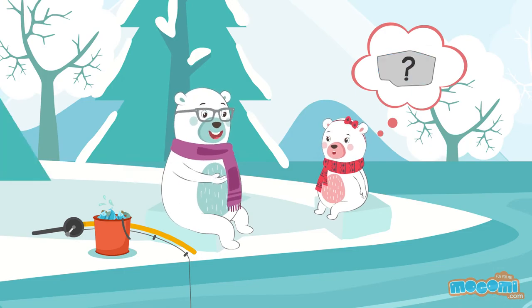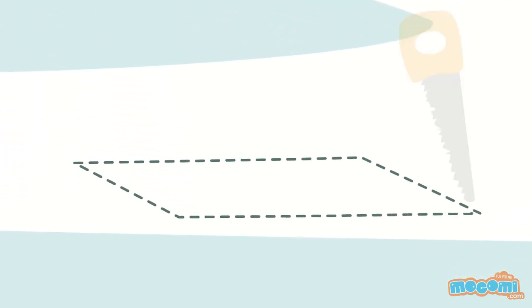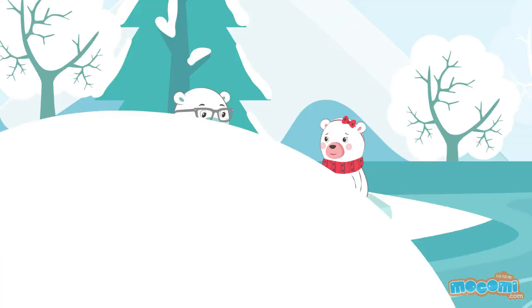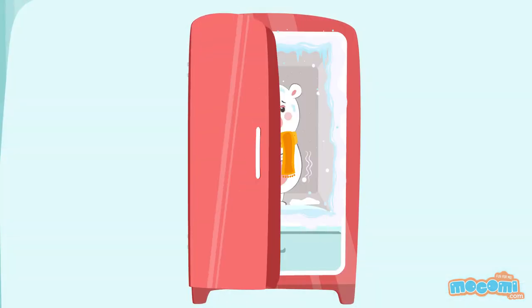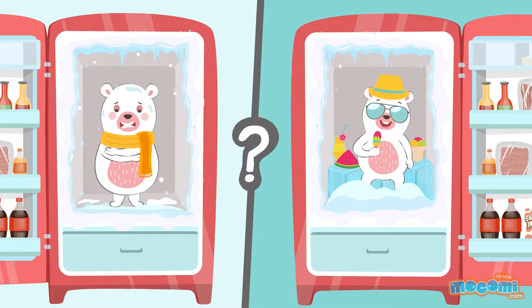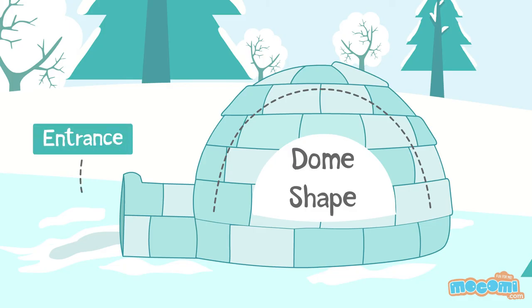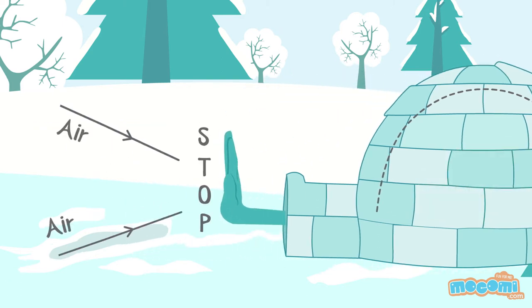What do we use instead? We use snow which has been blown by the wind as it has interlocked pieces of ice crystals in it. It can be cut into blocks and used as bricks for our igloo. But you still haven't told me how something cool will keep me warm.